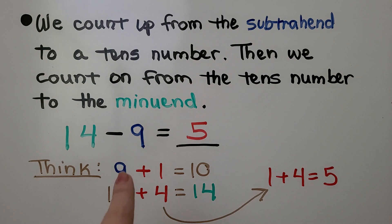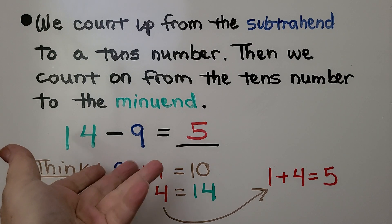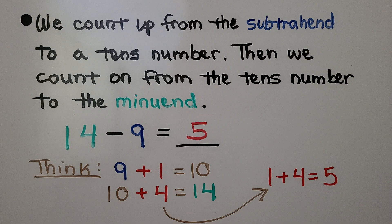We start at the subtrahend, 9, and we count on. We can say 9, 10, 11, 12, 13, 14. We counted on 5. So 5 is the difference.